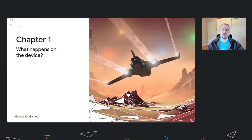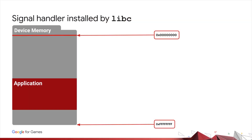Let's begin by understanding what the device does. When you build your application, libc will install the signal handler. Its purpose is to help you debug your application by providing some useful context, like a stack trace.